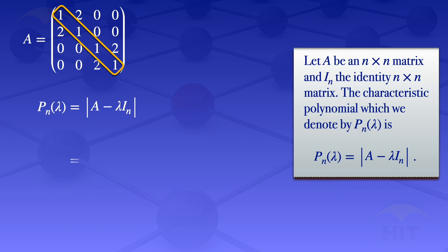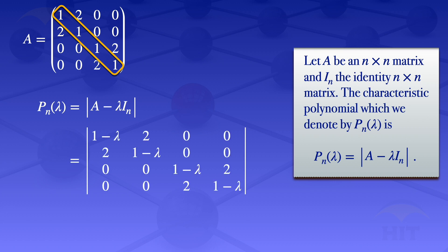The result will be the determinant of the matrix with elements: 1 minus lambda, 2, 0, 0; 2, 1 minus lambda, 0, 0; 0, 0, 1 minus lambda, 2; 0, 0, 2, 1 minus lambda.